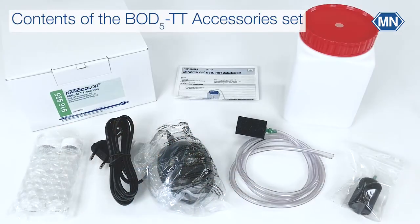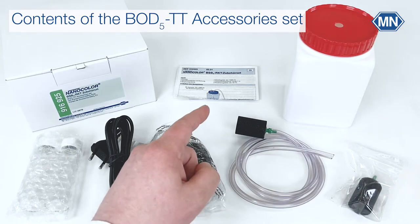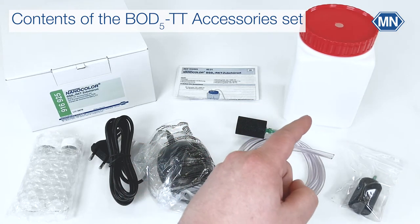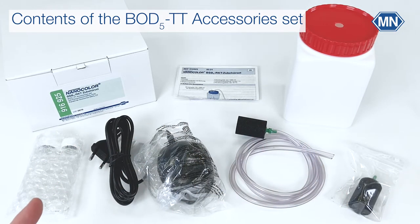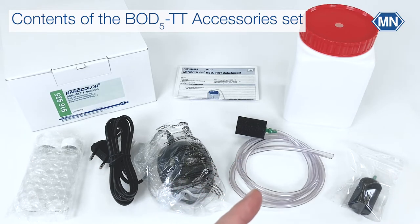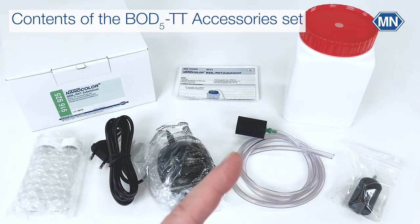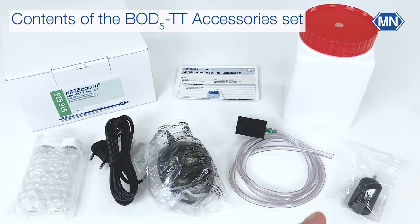The contents of the BOD5 TT accessory set are instructions, a storage vessel with a red lid, two reaction vessels, an electric air pump, a flexible tube with an aerating brick attached to it and an extra aerating brick.